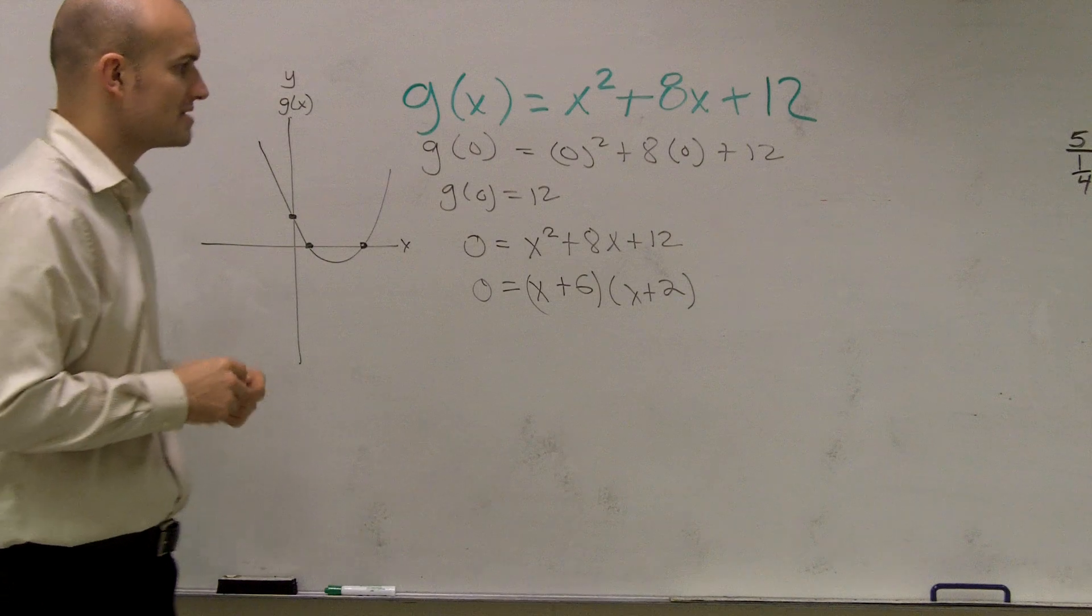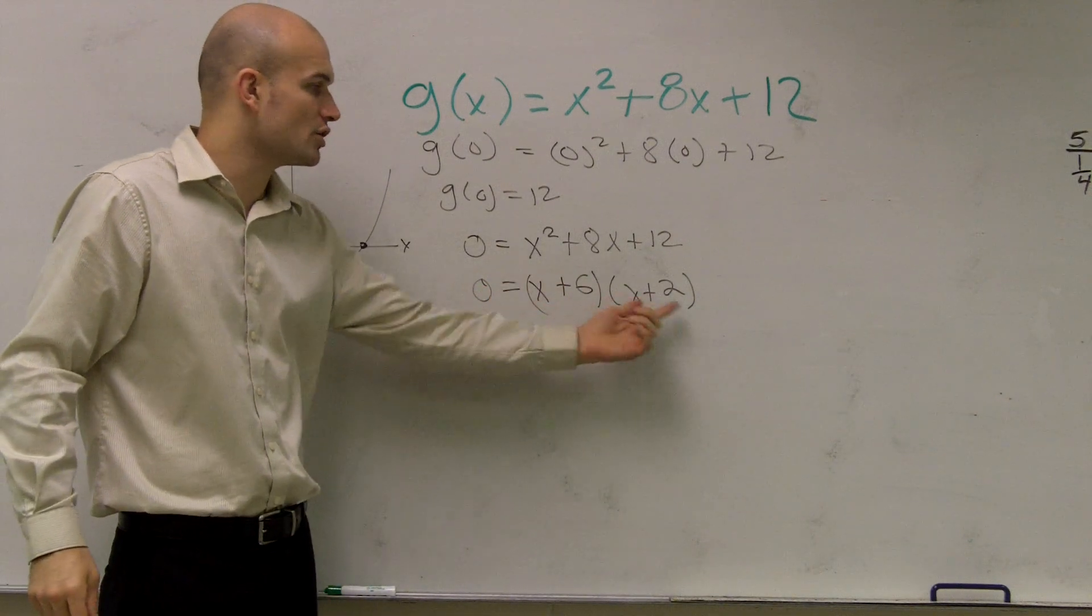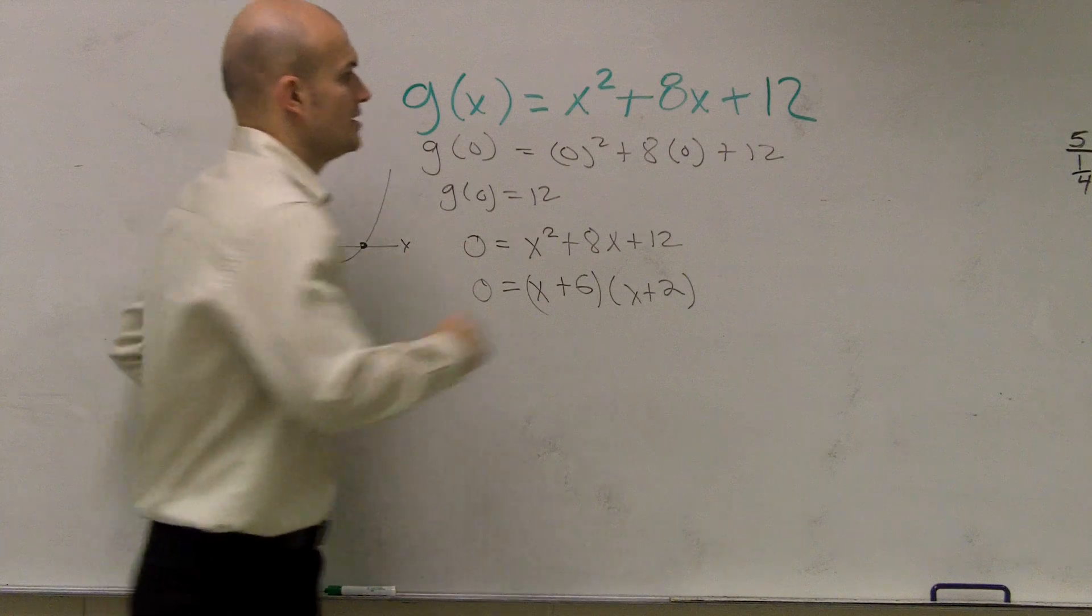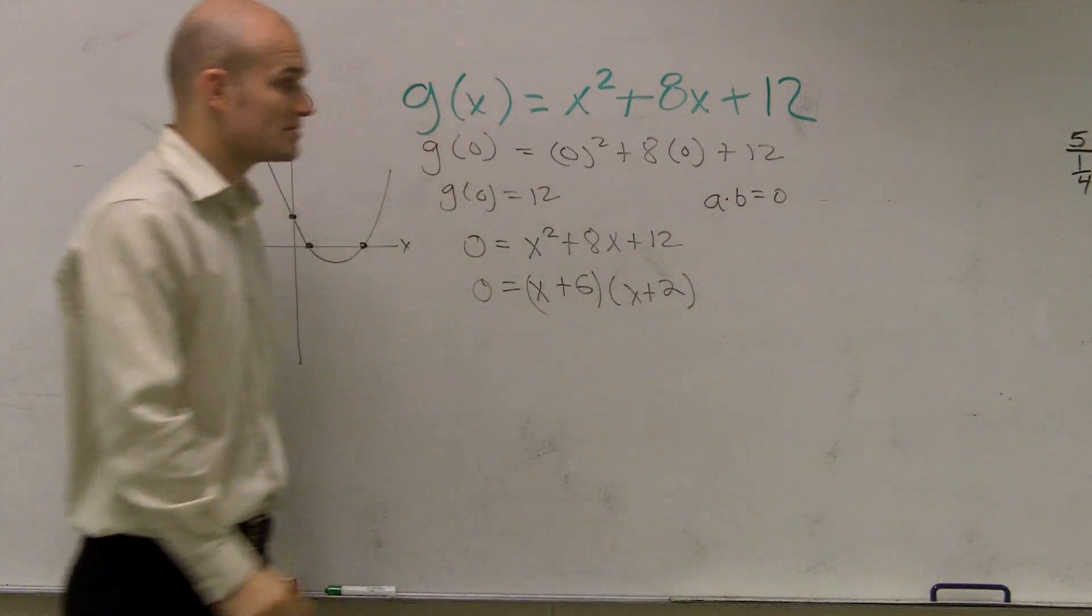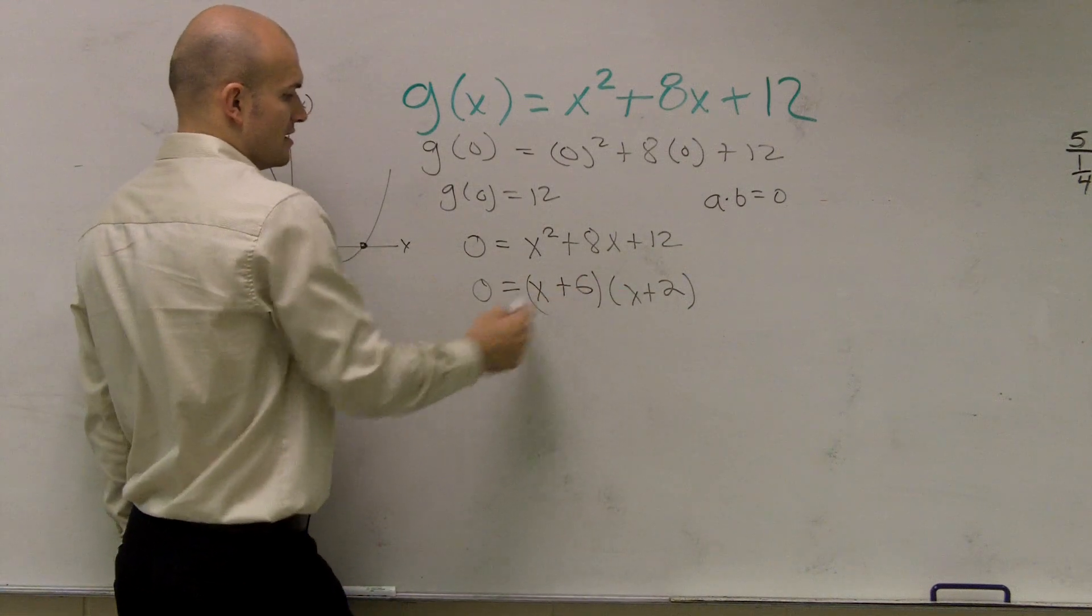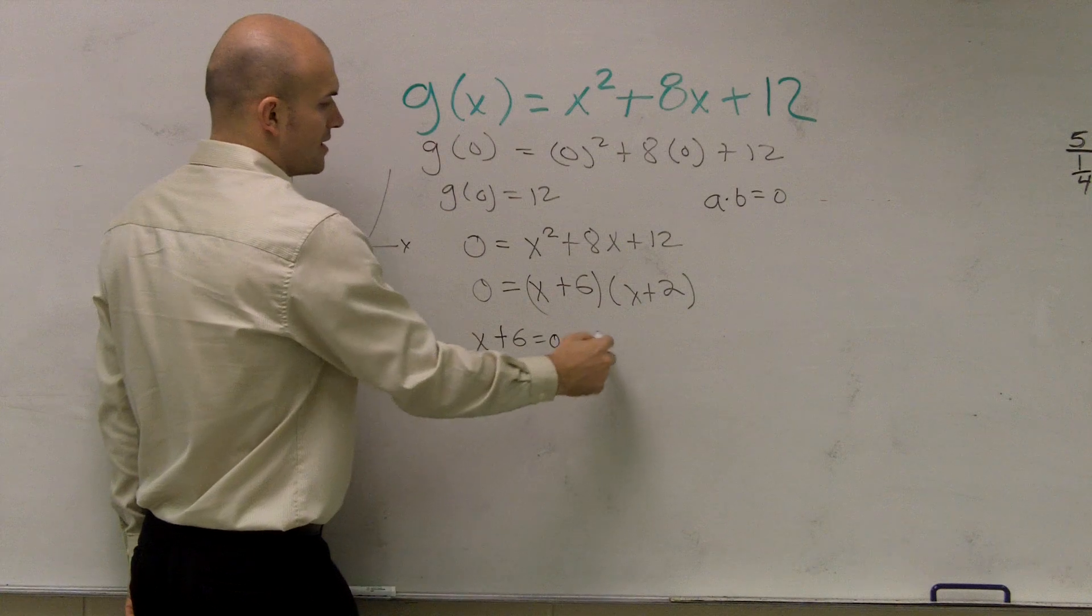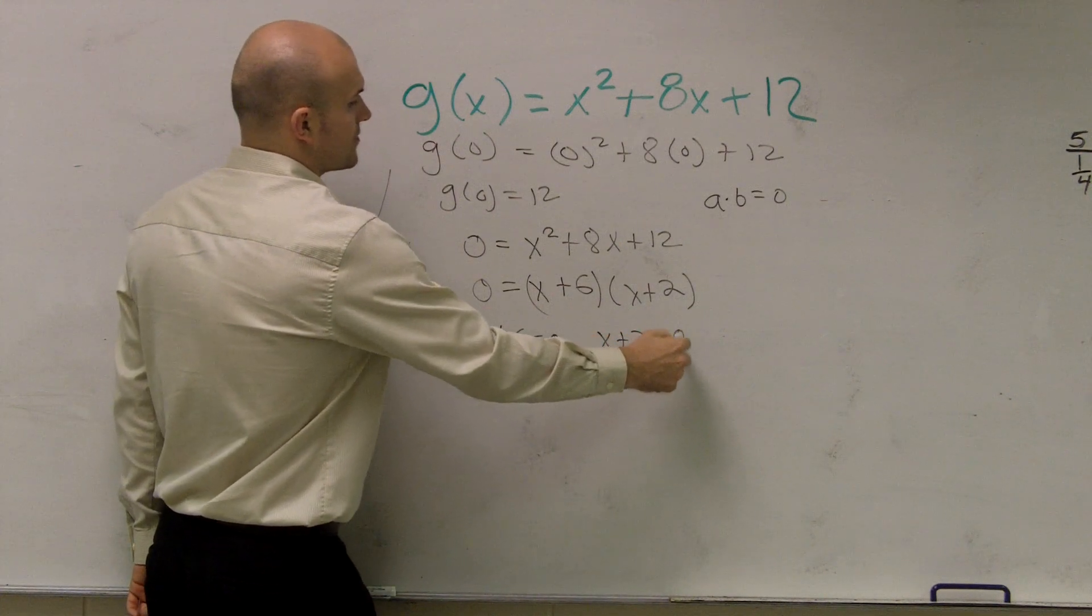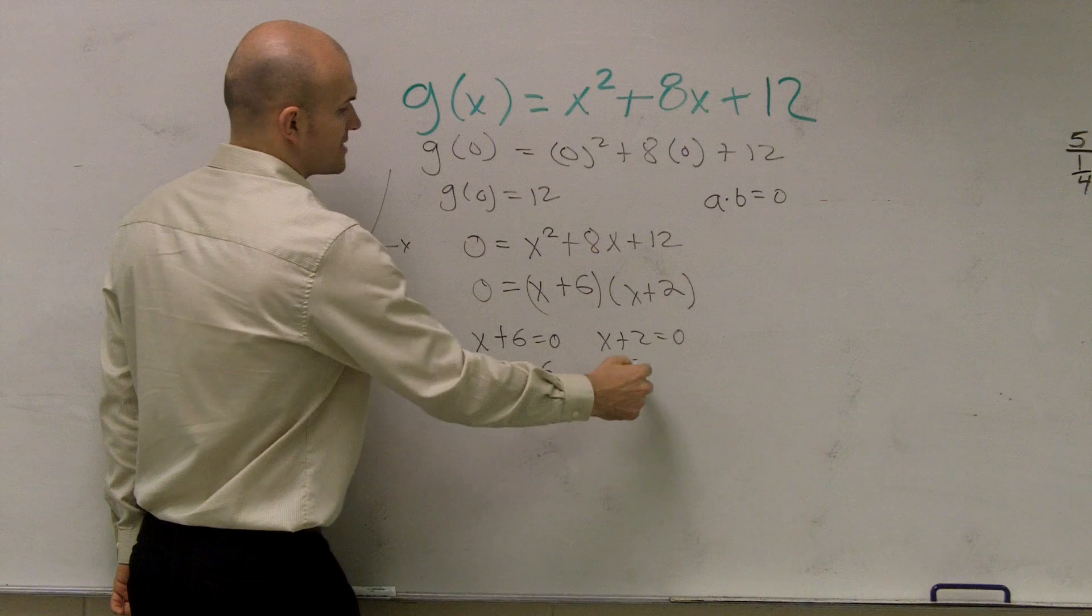And the reason why factoring helps us solve it is because now you can see I have two terms multiplied by each other. So if I had like a times b equals zero, one of those numbers has to be zero. So it's the same thing we're dealing with factors. So now I can write x plus 6 equals zero and x plus 2 equals zero. Then I solve when I get x equals negative 6 and x equals negative 2.